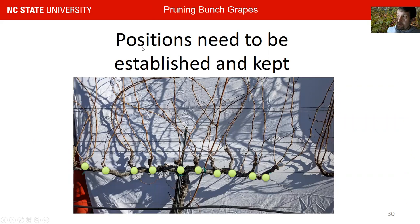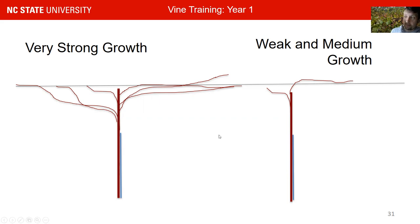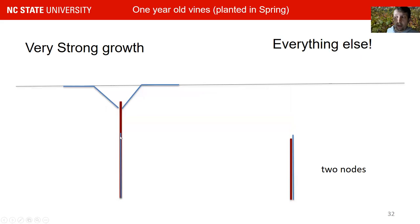Positions need to be established and kept early, and that usually happens during vine establishment. If we think about vine training, we really have to think about two different scenarios. The first scenario: look at your vine after you plant in spring, look at your vine when it goes dormant, and assess the growth strength. If you have very, very strong growth — which happens a lot in the southeastern part of North Carolina, Georgia, and South Carolina — that's a different scenario than medium or weak growth. For a very strong-growing vine, you can in most cases start establishing a cordon.